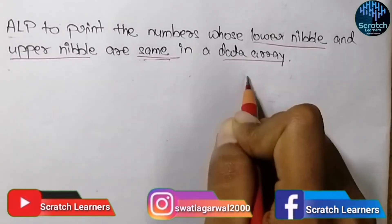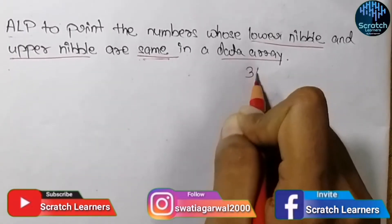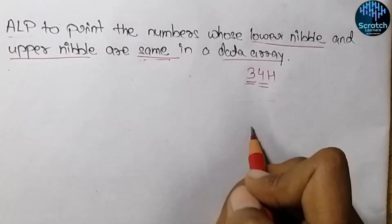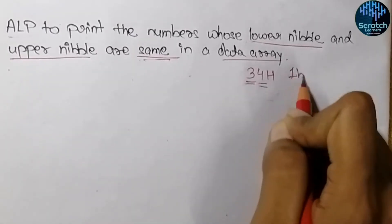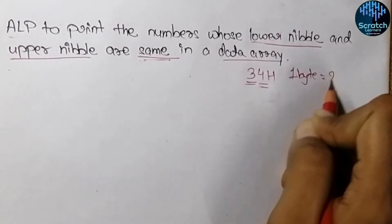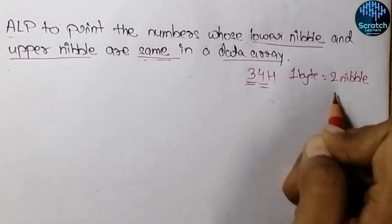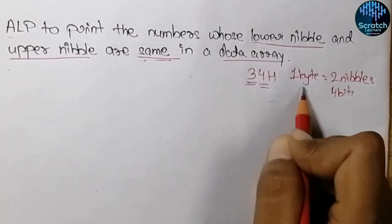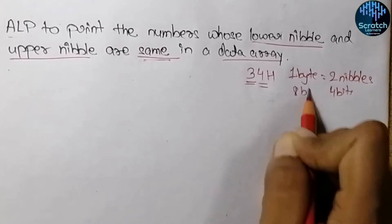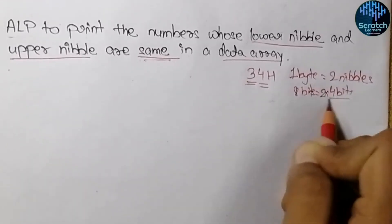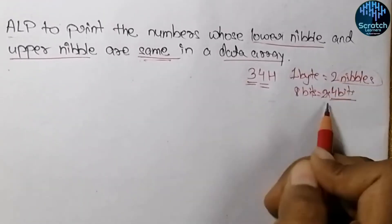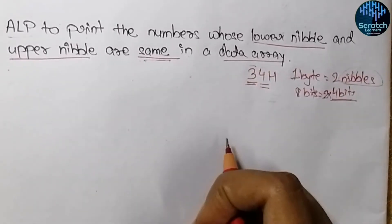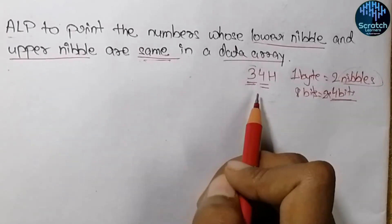In a data like 34 hex, this is the upper nibble and this is the lower nibble. A byte of number consists of two nibbles, each of four bits. Since a byte is eight bits, eight bits equals two times four bits, so a nibble consists of four bits — this is the upper nibble and this is the lower nibble in an eight-bit number.